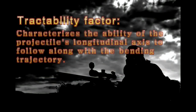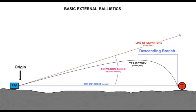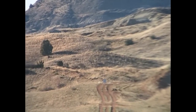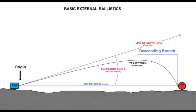Tractability factor is basically the bullet's ability to keep its nose pointed in the direction it's going throughout the curve of the trajectory. If a bullet were tracking perfectly, it would fly nose-on during the ascending leg, flatten out at the max ordinate, and point nose-down in the same direction of motion on the descending leg. However, gyroscopic stability during that descending leg can stiffen up the bullet's spin axis to the point where it remains pointing in the same direction as when it exited the barrel, or possibly even a little more nose-up.